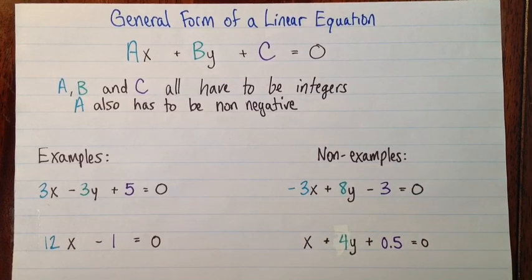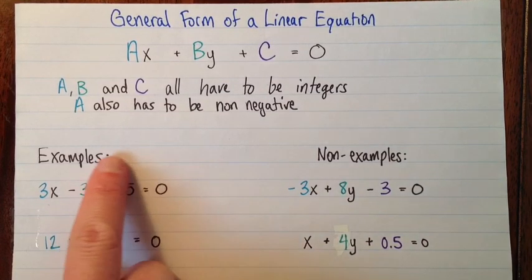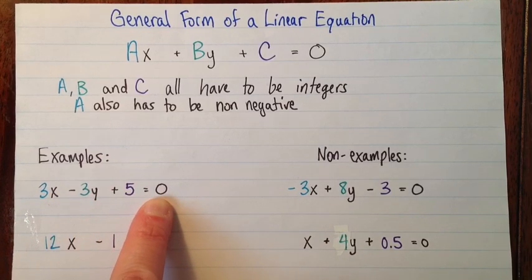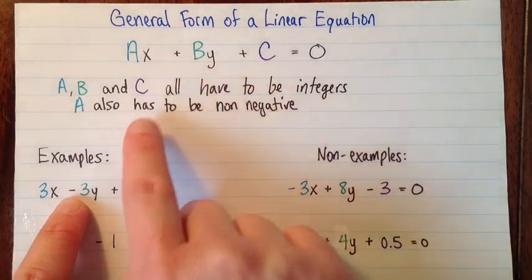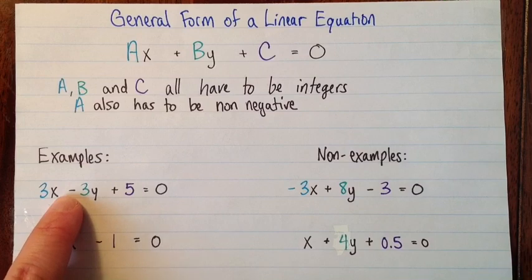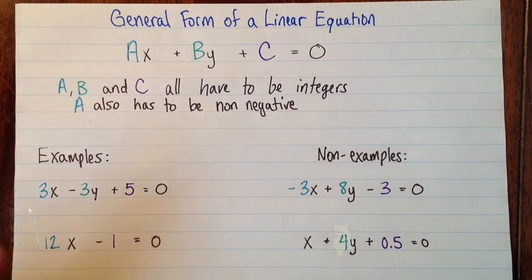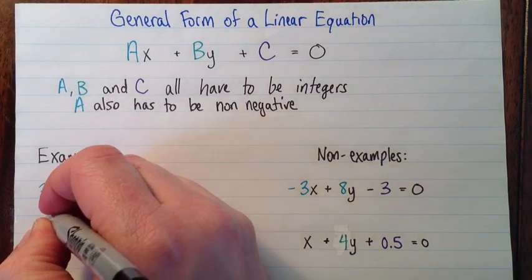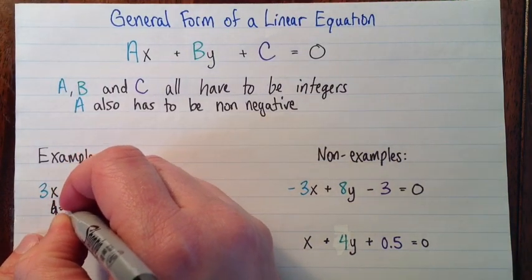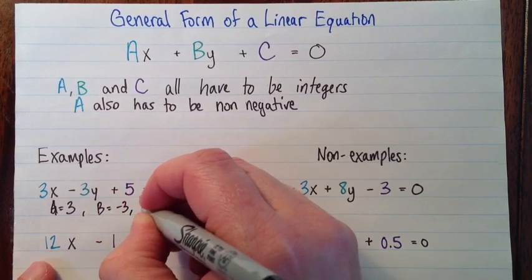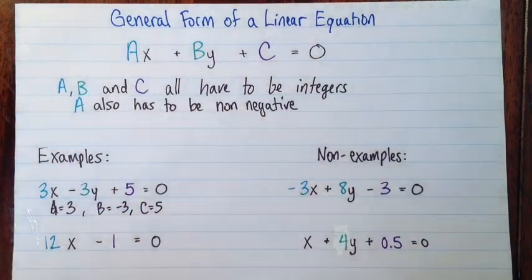Some examples of things that are in general form: If we have 3x - 3y + 5 = 0, this is general form. Even though instead of adding here I'm subtracting, this is the same as 3x + (-3y) + 5. So here my capital A is 3, B is -3, and C is 5.